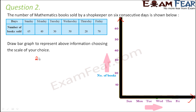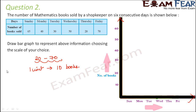The number of books values vary from 20 to 70. So the scale chosen is one unit represents 10 books — that means one square represents 10 books. This is the scale we have considered.